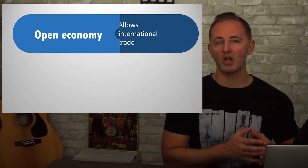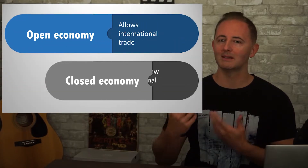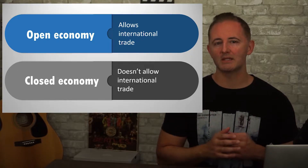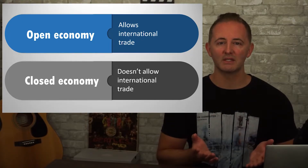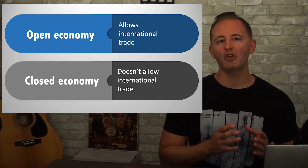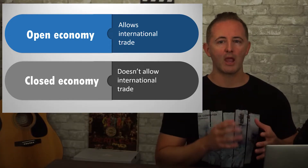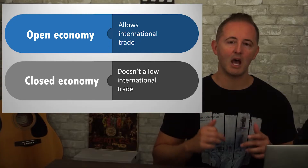Before we move on to the demand curve, I need to add a little wrinkle to the supply, which is that it matters whether we have an open or a closed economy. An open economy trades with other countries while a closed economy does not. The reason this matters is because the supply curve represents savings, so we have to know whether people from other countries are able to save their money in this economy.